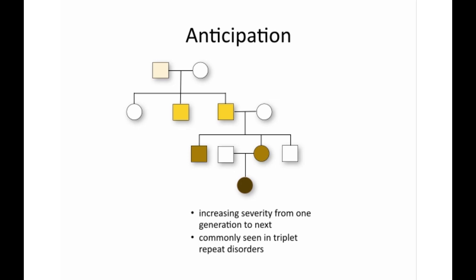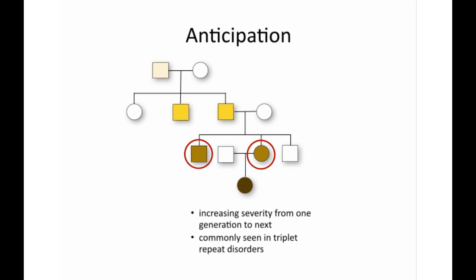The phenomenon of anticipation is described as the increasing severity of a phenotype from one generation to the next, and earlier and earlier age of onset. So in this pedigree, a relatively mild individual has offspring who are slightly more severely affected, who in turn has offspring who are a bit more severely affected, and finally this individual has a child who is quite severely affected.